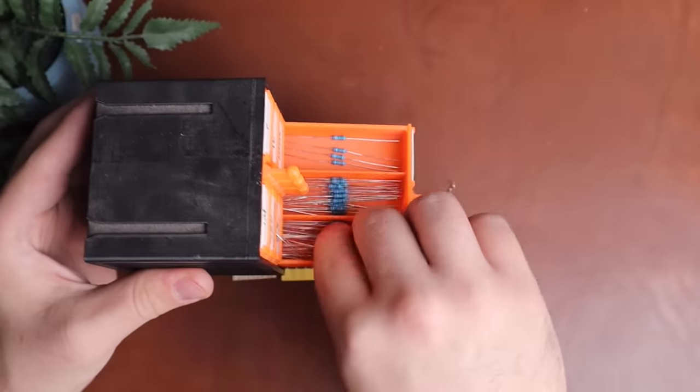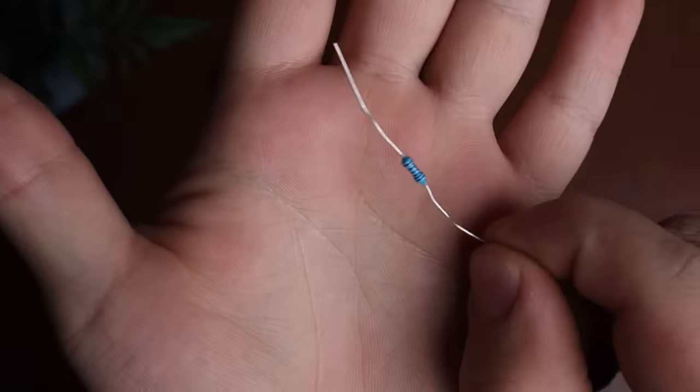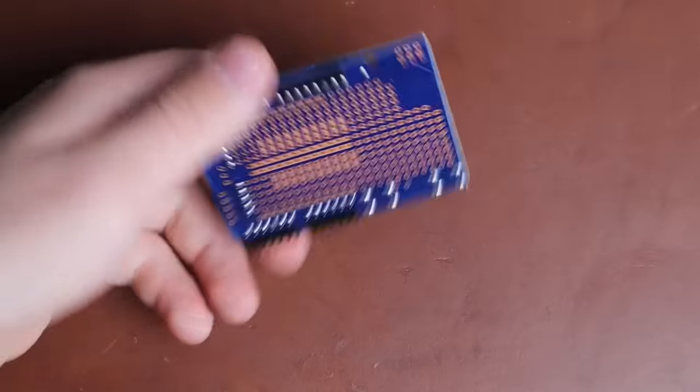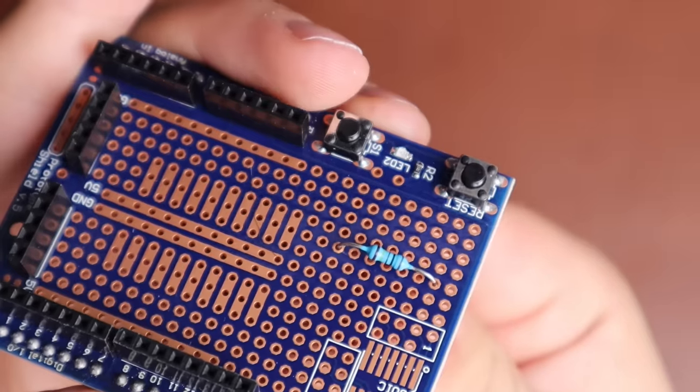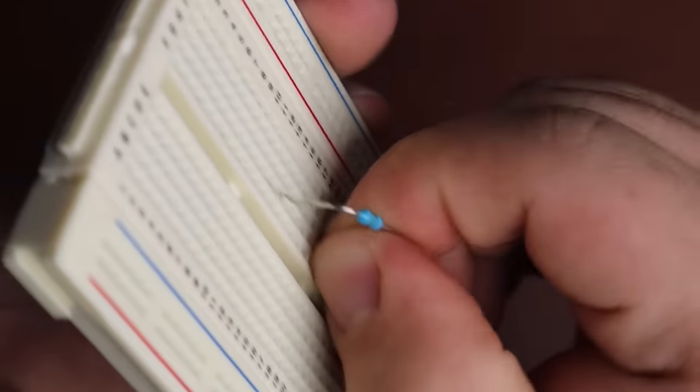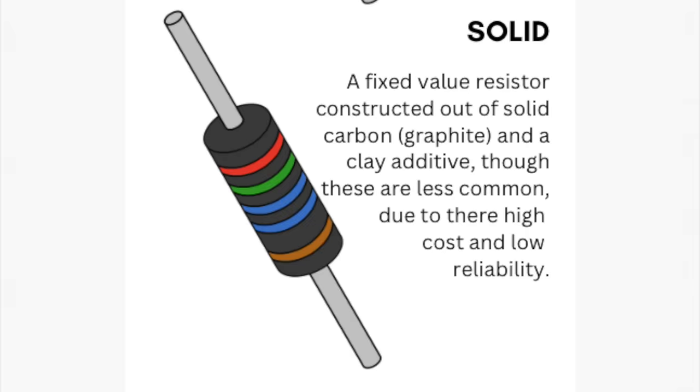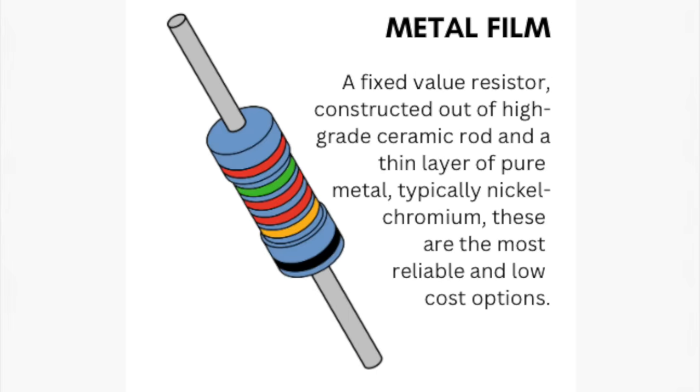The first type we'll look at is the most common for custom projects, tinkering, and prototyping. These are through hole resistors. They're intended to be used on a circuit board with through holes or a breadboard for rapid prototyping. There are three main types of through hole resistors: solid carbon, carbon film, and metal film resistors.